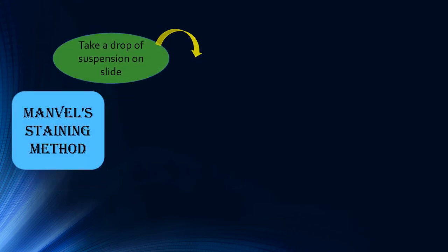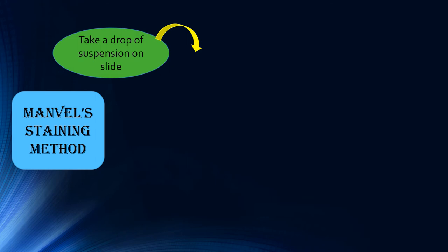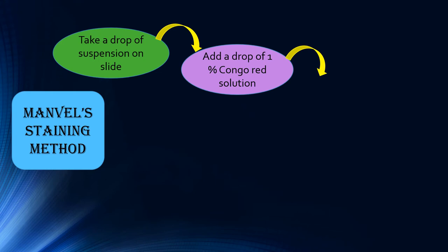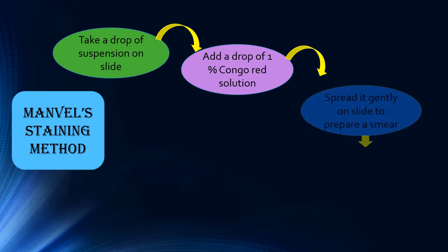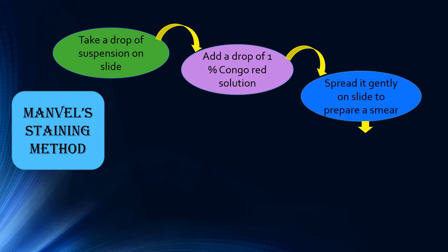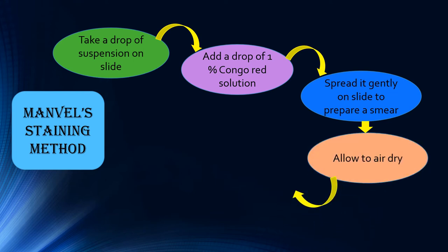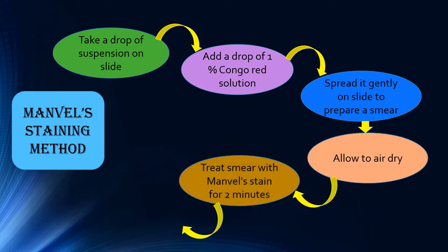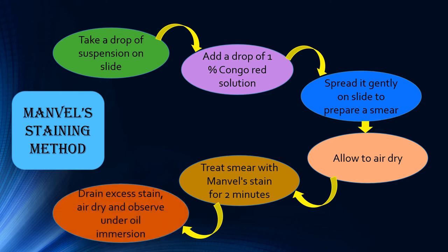Now let's see the flowchart of Manuel's staining method. First, take a drop of cell suspension on the slide. Add 1% Congo red solution. Spread it gently on the slide to prepare a smear. Allow it to air dry. Treat the smear with manual stain for 2 minutes. Drain excess stain. Air dry and observe under oil immersion.